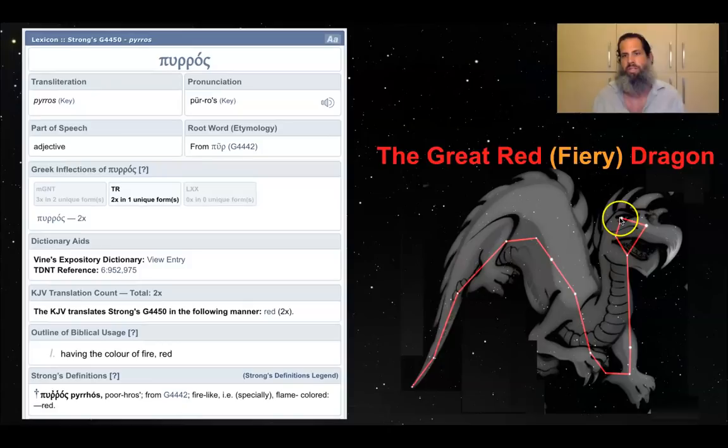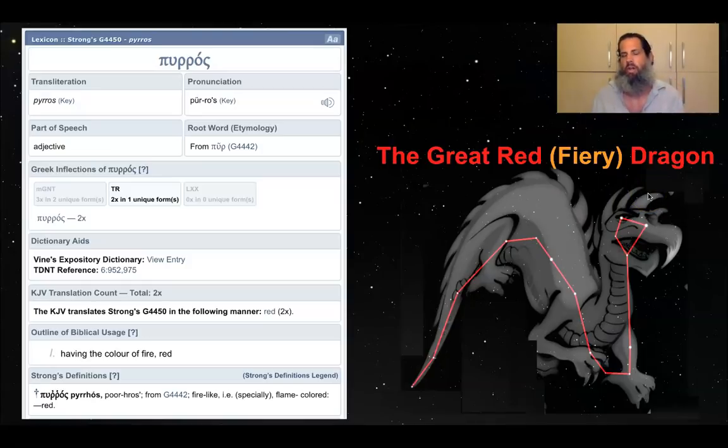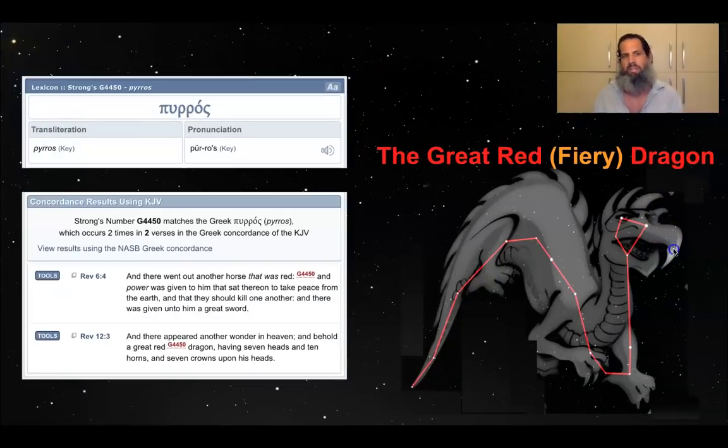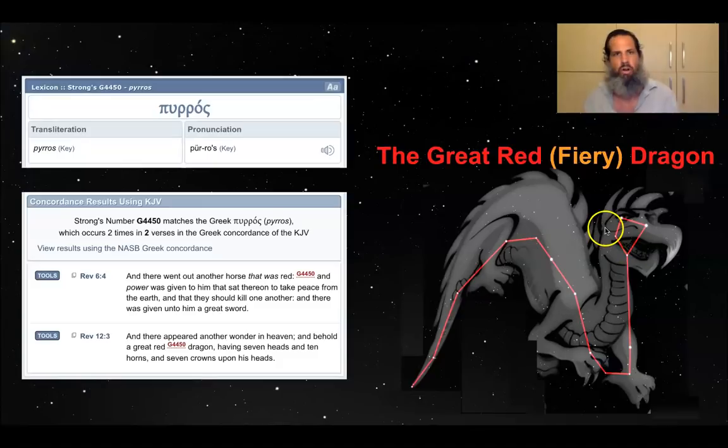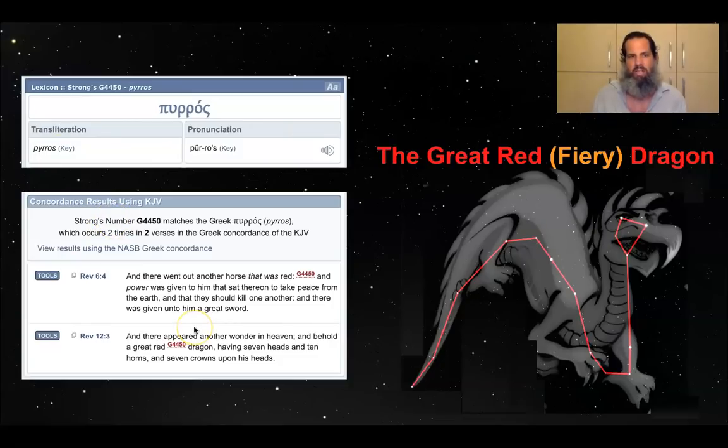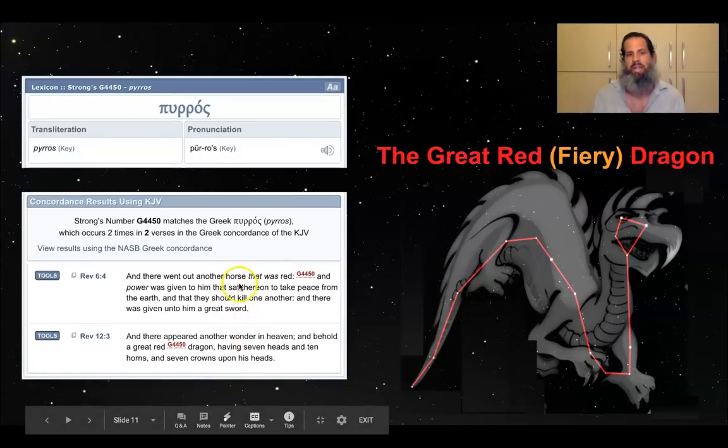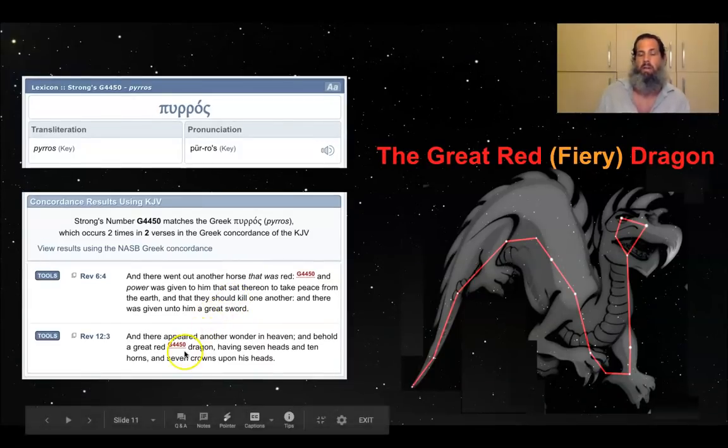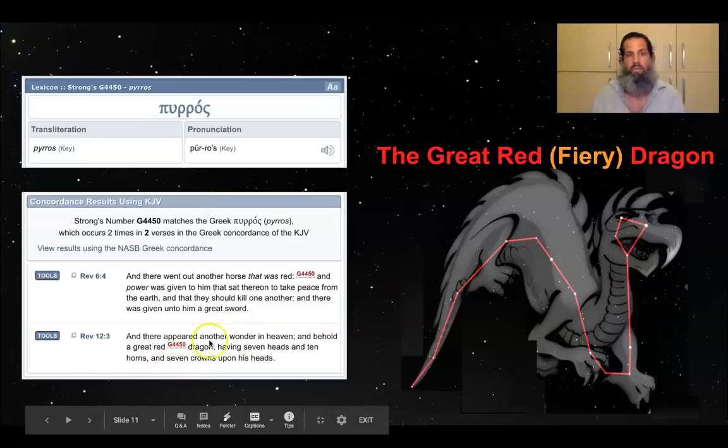That is something to consider regarding the fiery red dragon. One of its stars here in its head is this orangish fiery color, and they blink. When you take a look at stars, they're flashing like fire. That word pyros only appears two times in the New Testament. What's very interesting is it not only describes the great red dragon, who's Satan, but it's also the same word used to describe the color of the red horse.